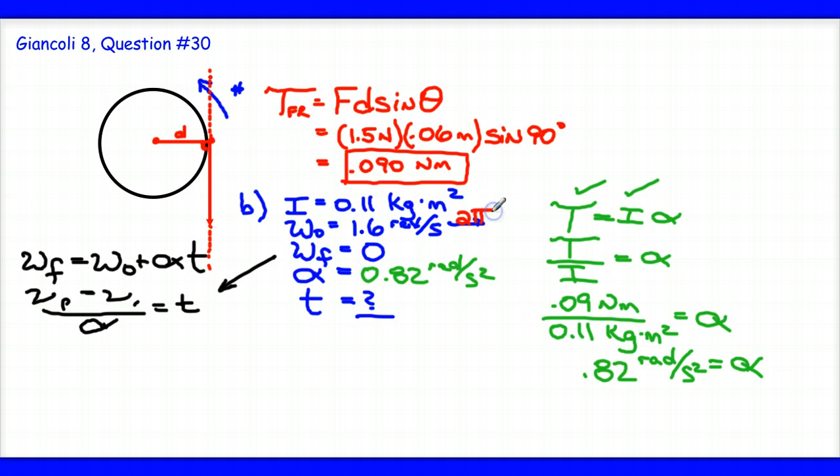So I'm going to convert my revolutions per second to radians per second since one revolution is two pi radians. I'll ultimately just multiply two pi radians over one revolution. And I end up getting 10 radians per second. So now I have my initial angular velocity in radians per second.